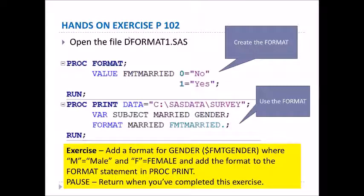In the PROC PRINT statement, notice that there is a FORMAT statement. This is how we apply the format to a variable. In this case we're applying the format FMT_MARRIED. with a dot to the variable called 'married'. Notice that the format name has a dot after it — every time you use a format you have to have a dot at the end, or a dot-number at the end. That tells SAS that this is a format name.